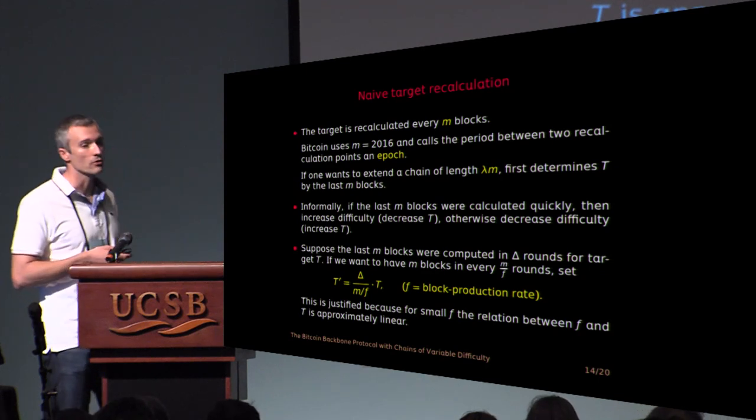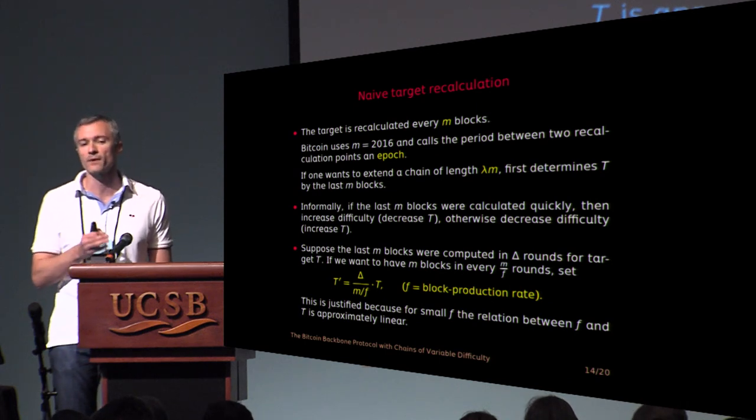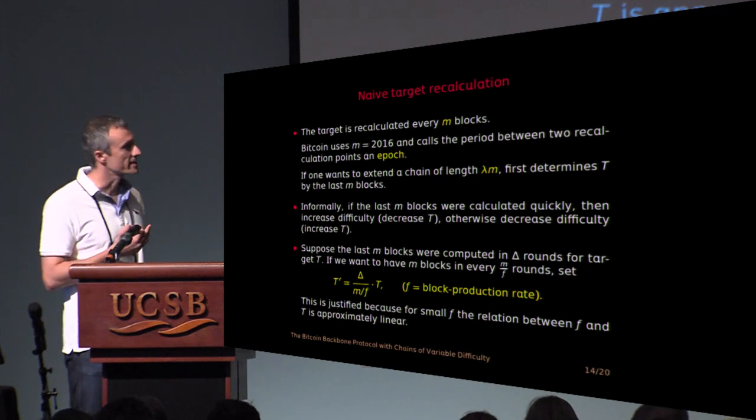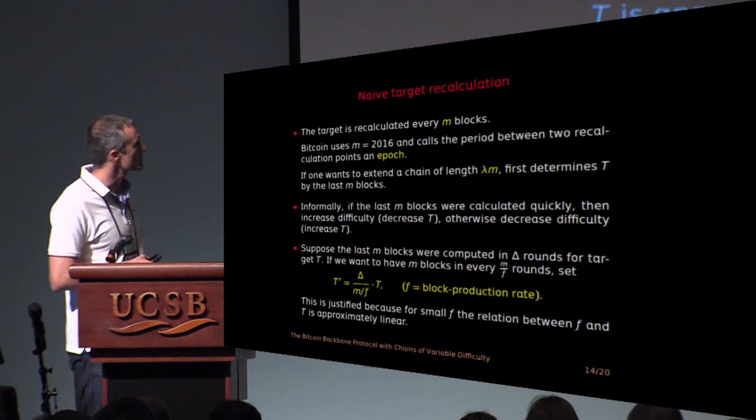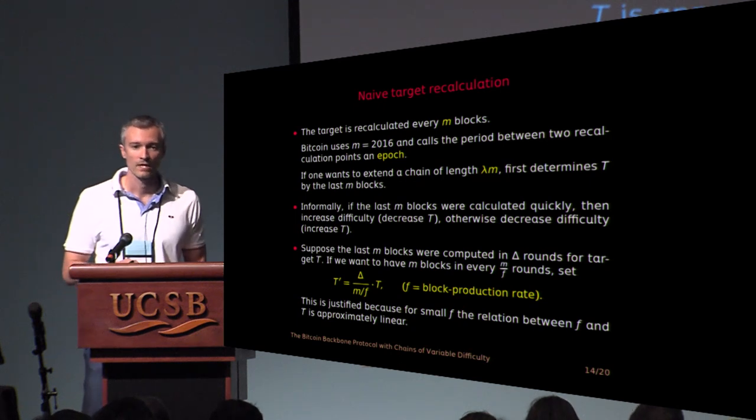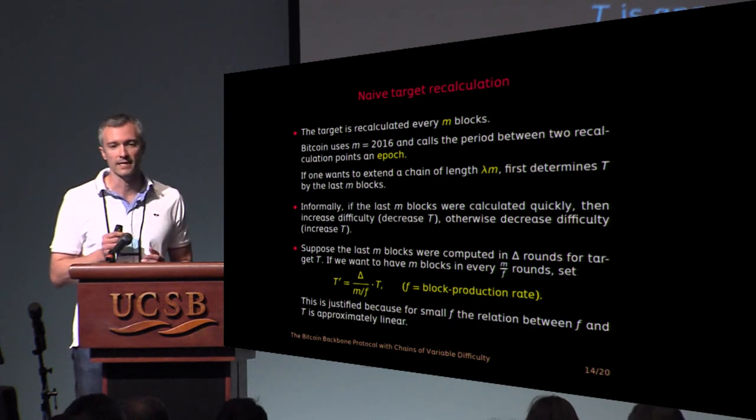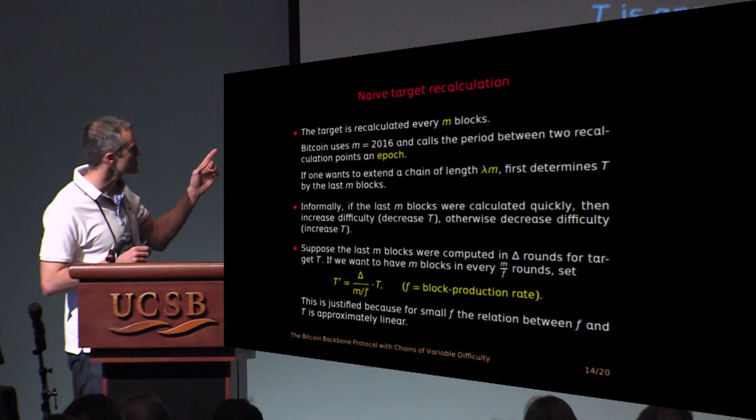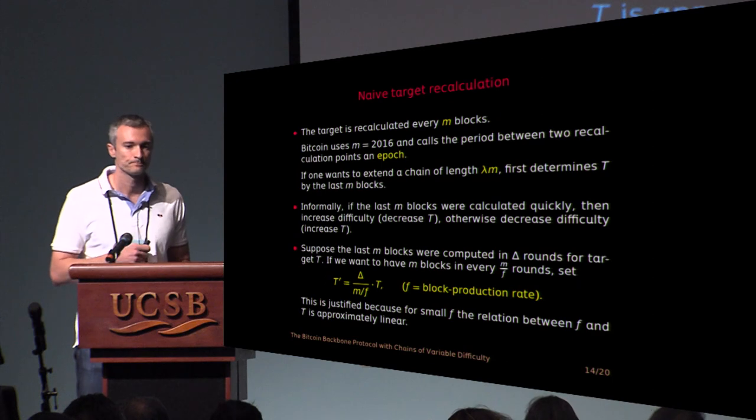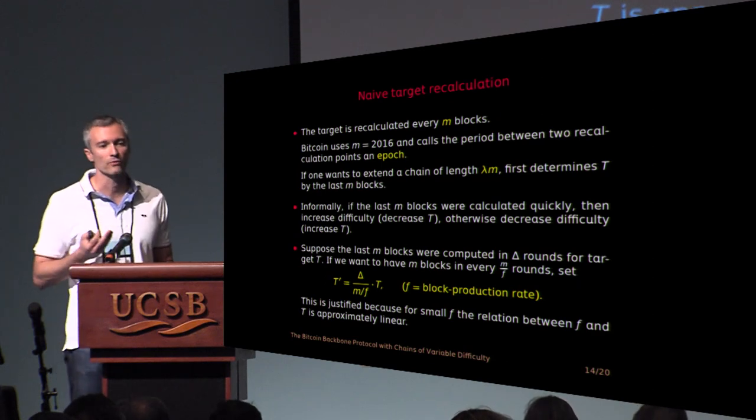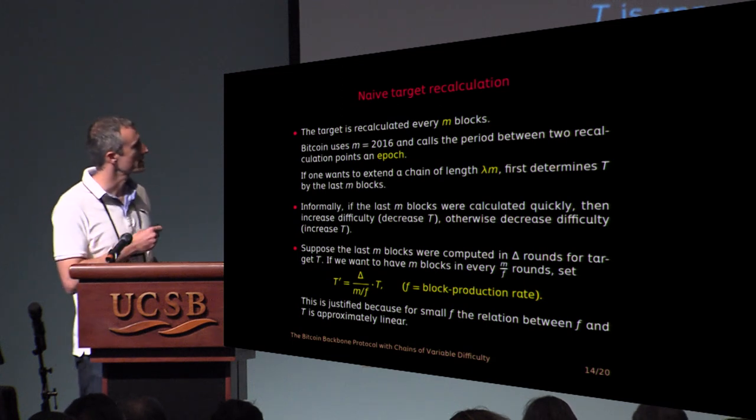You say, okay, I look at m blocks and I want my block production rate to be f. So every block should be computed in about 1 over f rounds. So m blocks, I should get them in about m over f rounds. But say my epoch was finished in delta rounds. Then, because when block production rate is small, the f and t are linearly related, approximately, it makes sense to set a new target to increase it by a factor of delta over m over f. So this was finished 1.1 times faster, you're going to decrease the target by 1.1.